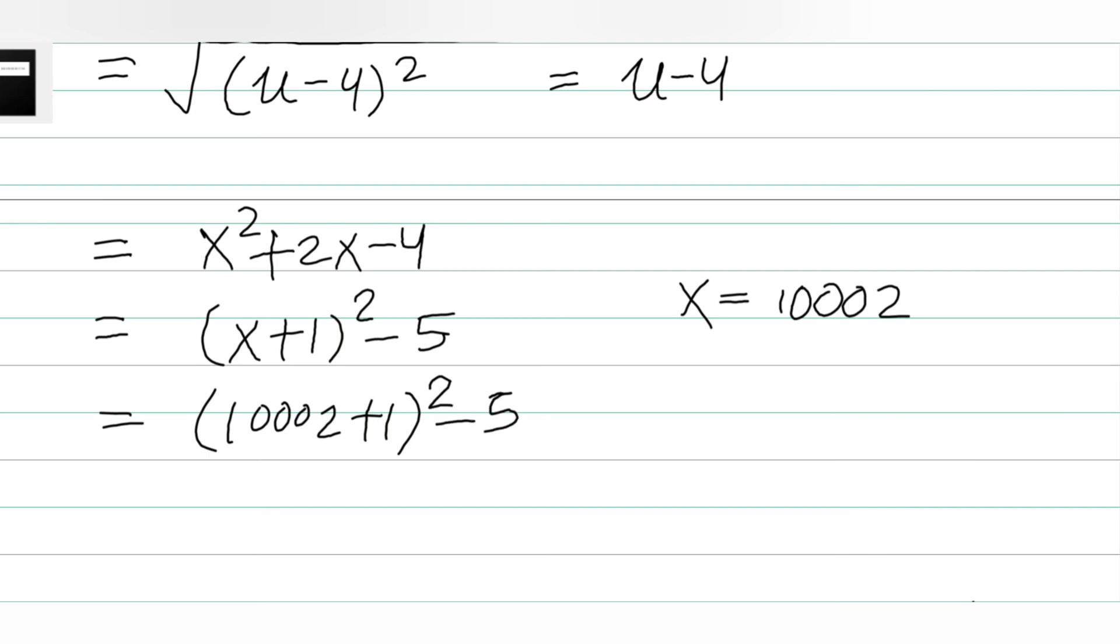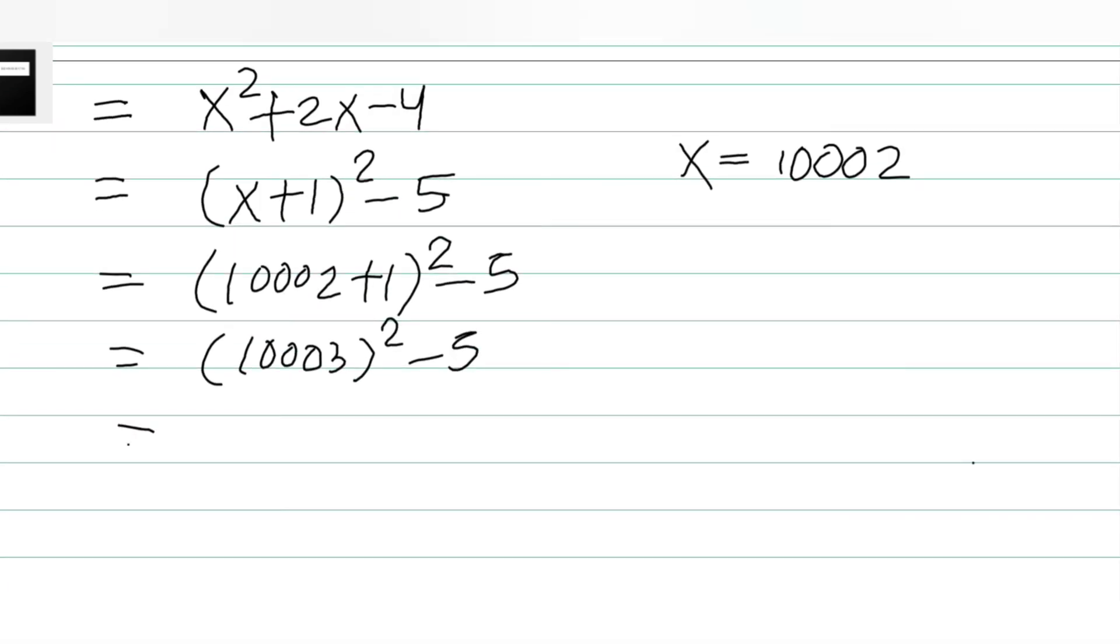(10002 + 1)² - 5, which is (10003)² - 5. And now after the simplification, we'll get 100060009 - 5, and finally the answer is 100060004.